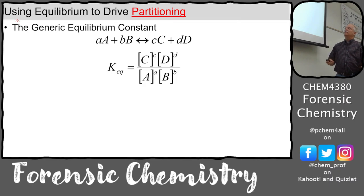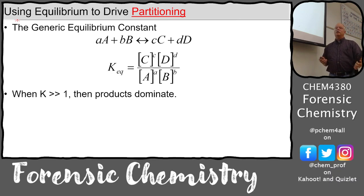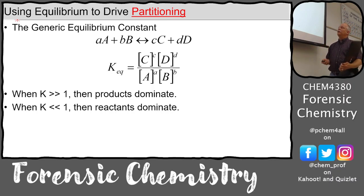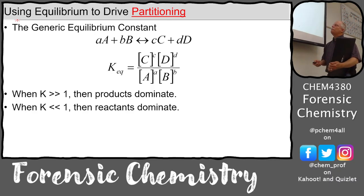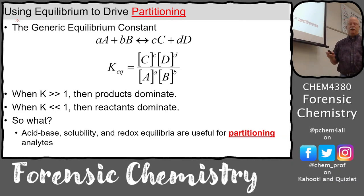We have the general equilibrium constant you're all familiar with — products over reactants raised to the power of their coefficients. When K is much greater than one, products dominate; when K is much less than one, like 10⁻¹⁵ or 10⁻⁵, the denominator is orders of magnitude greater than the numerator. Acid-base, solubility, and redox equilibria are all useful for partitioning analytes; we'll mostly discuss acid-base partitioning.